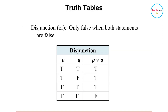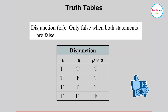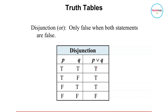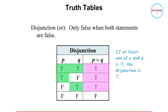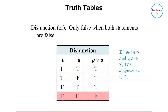For disjunction statements, the truth table is given by this. When you say disjunction, this is the OR statement. The disjunction statement is only false when both statements are false. This statement is always true except for the case when both statements P and Q are false. If both statements are true, or just one of the statements is true, the disjunction statement is true. Otherwise, if both statements are false, the disjunction statement is also false.